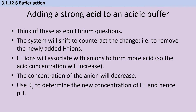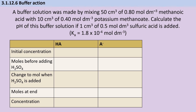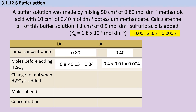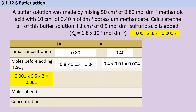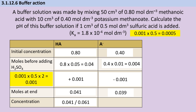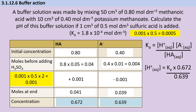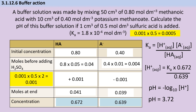Likewise when adding acid, think of this as an equilibrium question where the equilibrium shifts left to remove the added hydrogen ions. For a buffer with sulfuric acid added, watch out for that diprotic acid with its two hydrogens — so 0.0005 mol of sulfuric acid gives 0.001 mol of hydrogen ions. The acid concentration increases and the anion concentration decreases by that amount. Work out the final moles and concentrations, substitute into Ka, rearrange to make hydrogen ions the subject, put that into the pH calculation, and get an answer of 3.72.